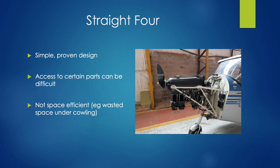The next kind of engine is a straight four. Instead of being horizontally opposed, it's vertically opposed. It's a very simple design and easy to access all the certain parts of the engine. However, it's not very space efficient — it's quite large in size with a lot of wasted space underneath the cowling — and they are ultimately a little bit heavier than the engines we use nowadays. These are generally found on smaller but older aircraft.